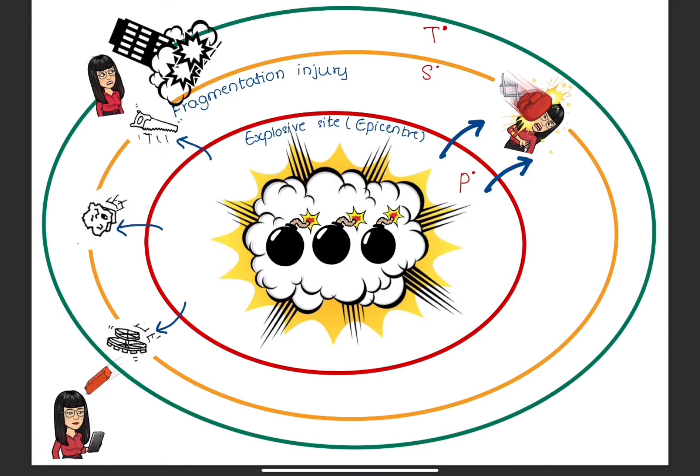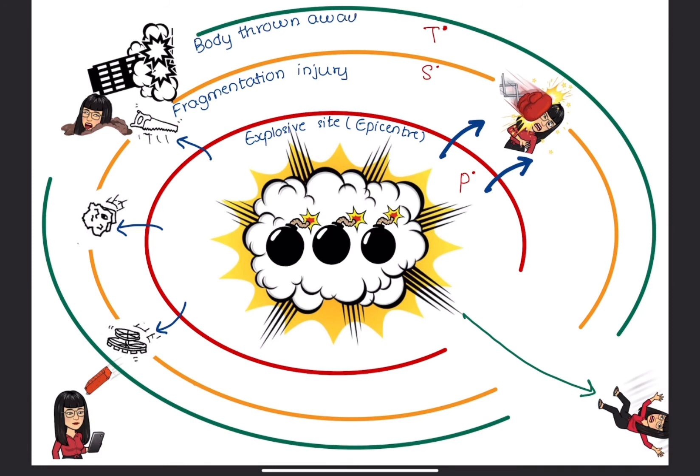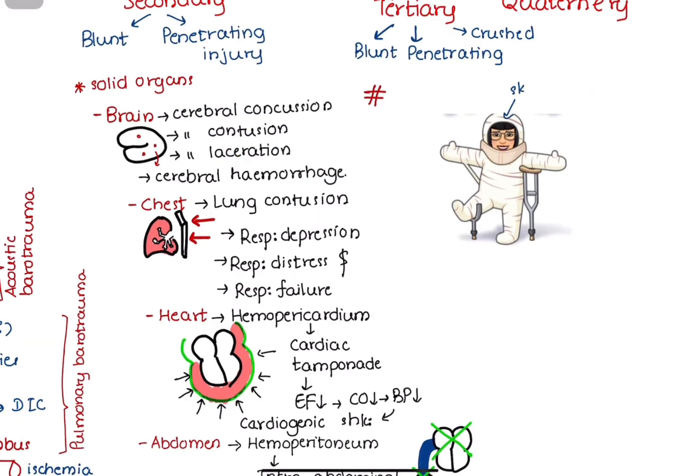Tertiary blast injuries occur when a person is thrown by a blast wind and hits nearby objects, causing structures to collapse upon the person. Types of injuries under this category may be either blunt or penetrating injuries as well as crush injuries. Commonest types of injuries are fractures like skull fracture, limb fracture, and fracture ribs, especially flail chest.